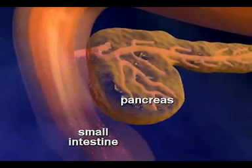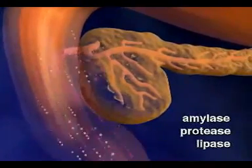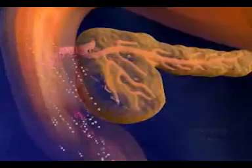For example, the pancreas secretes three enzymes into the small intestine: amylase, protease, and lipase. These enzymes are also produced by the intestinal wall.